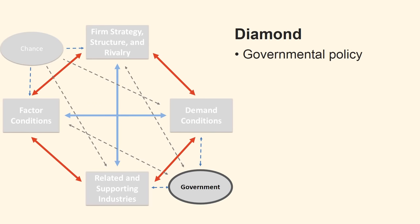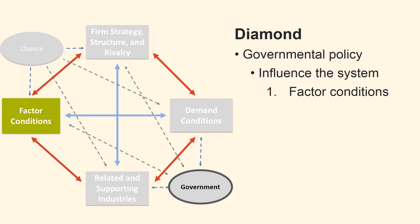We shall now review Governmental Policy. It influences all four of the determinants through various regulatory and deregulatory measures. Policies implemented without consideration of how they influence the entire system of determinants are as likely to undermine national advantage as enhance them. Government affects factor conditions in many ways. Among the most important roles of government is creating and upgrading factors, whether they are skilled human resources, the bases for scientific knowledge or infrastructure. Among these factors there is little doubt that education and training are decisive in national competitive advantage. The fact is that world standards for workers, technical personnel and managers are high and rising. No nation will prosper unless its citizens meet them.